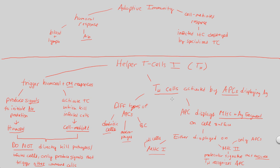MHC class 1 will be important later when we discuss how cytotoxic T cells know what to kill. But for now, helper T cells need a message from an antigen-presenting cell — that APC displays the antigen fragment on MHC class 2, which combines with the helper T cell to give overall activation of the helper T cell.